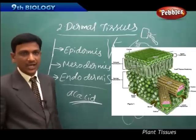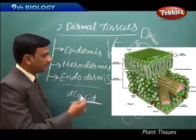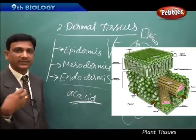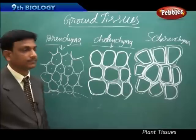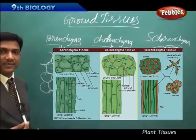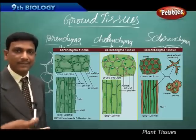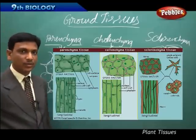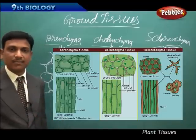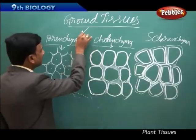Dermal tissues have features like stomata and root hairs that help in the exchange of water and gases. Now moving to the third type of tissue: ground tissues. Ground tissues form the bulk of the plant, giving it shape and support, forming the main base. They are involved in the functions of support, storage of food, and some ground tissues help in the process of photosynthesis.